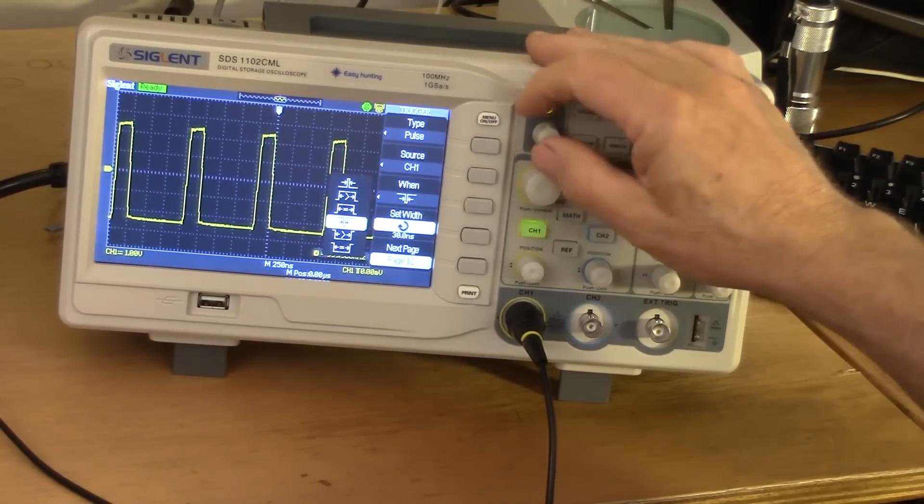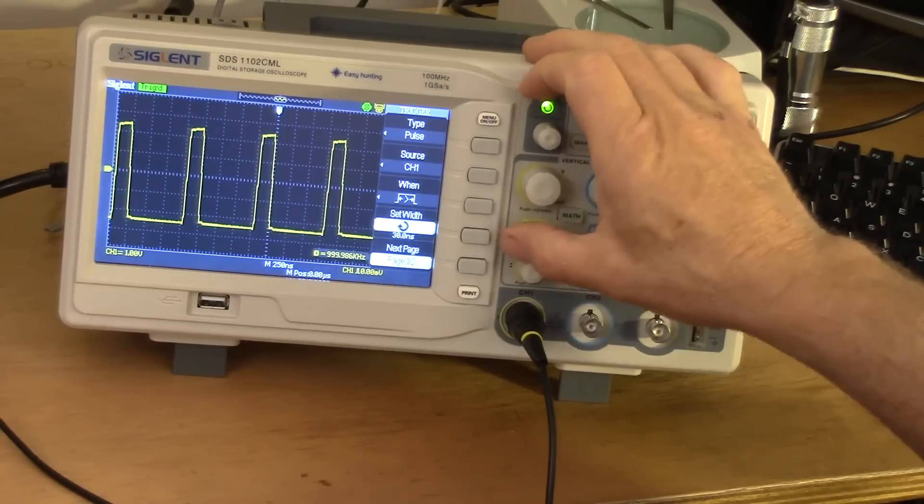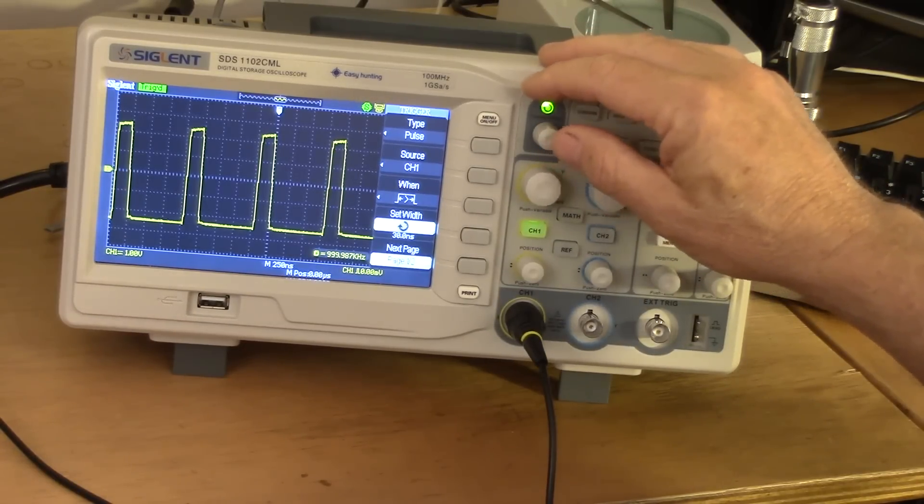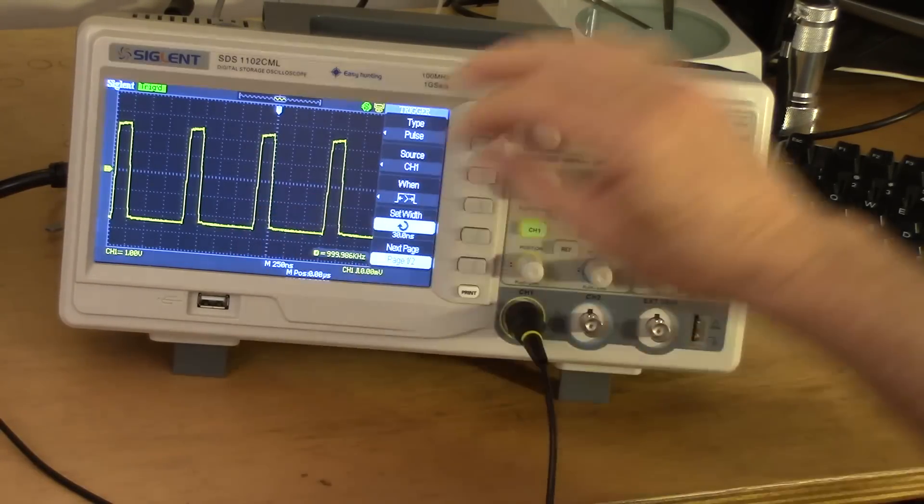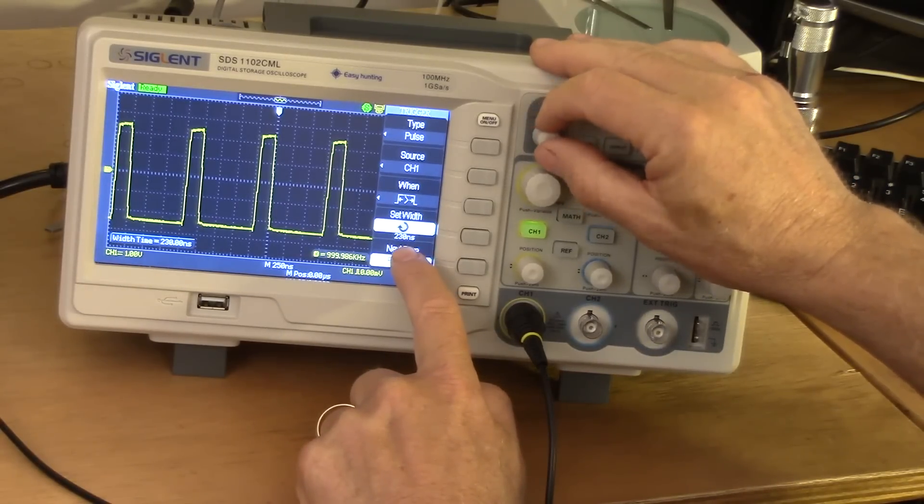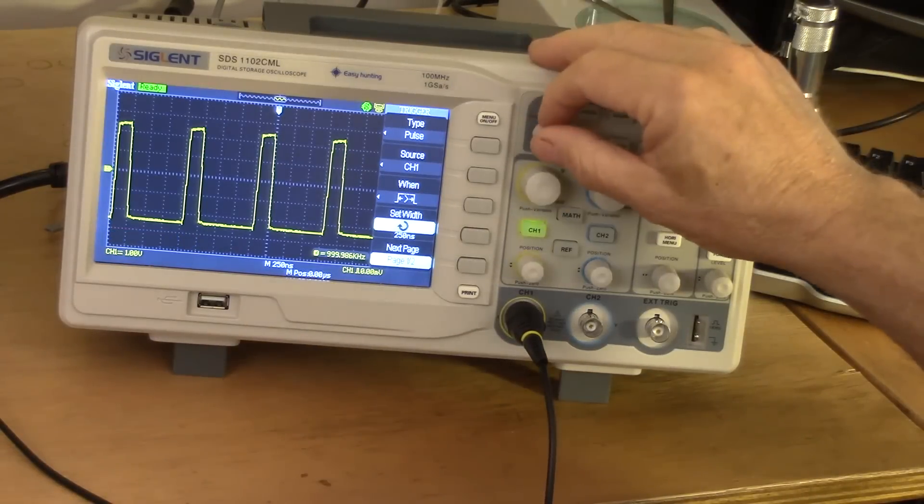So if I set that to a greater than here, then we can set the width with this button. And as I said, there's a 200 nanosecond pulse. It's going to trigger whenever there's a pulse more than 30 nanoseconds long. And of course you can see it's triggering like crazy. As I crank this up, here I'm over 200 nanoseconds. It's no longer triggering. Okay, so that's kind of cool.